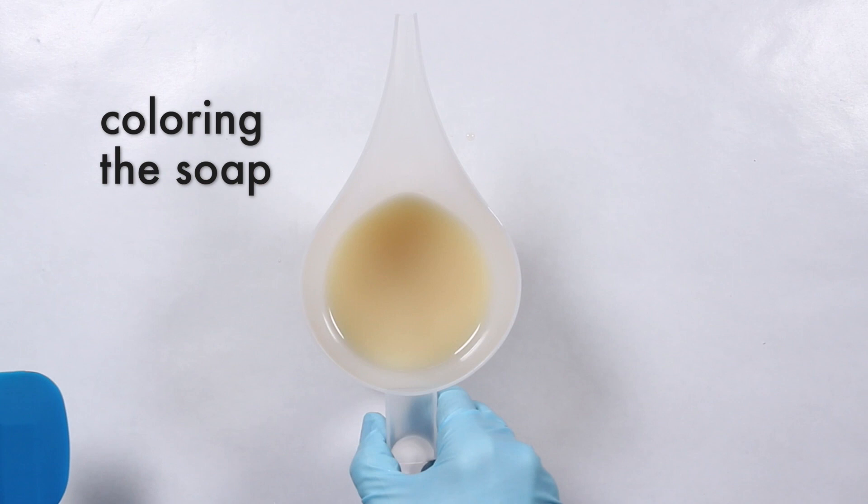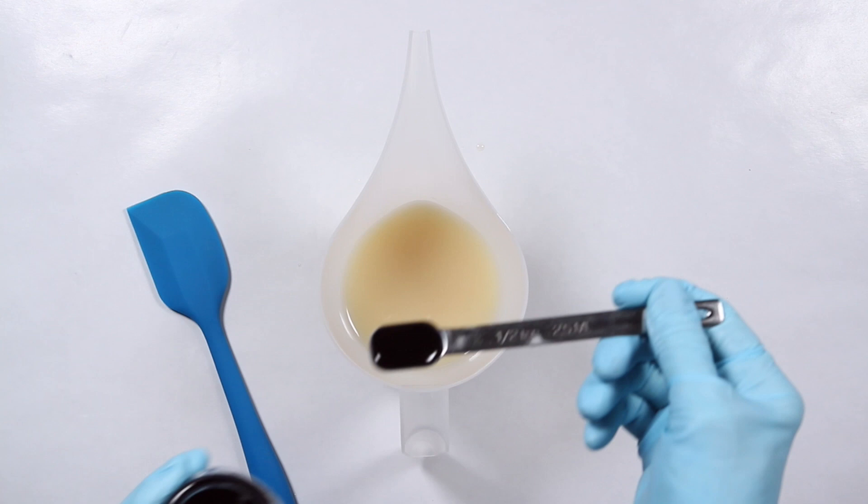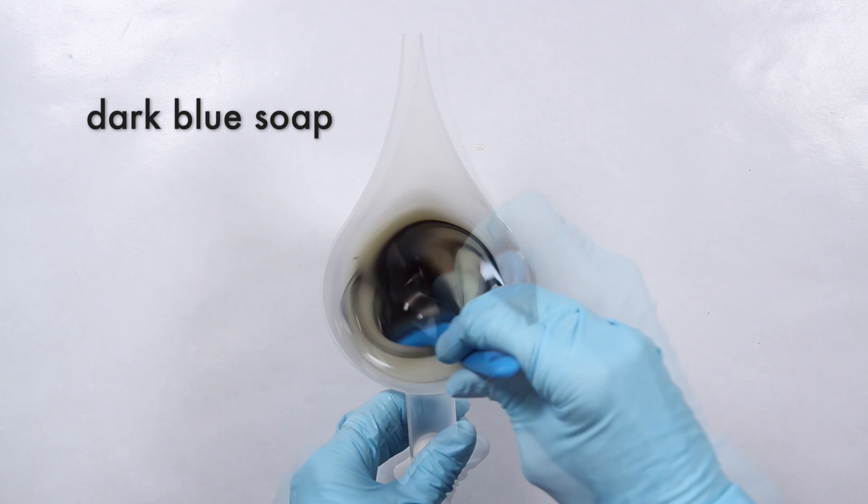To make the dark blue soap, I used a combination of the indigo and charcoal I prepared earlier. To one cup of soap, I added a half teaspoon of the indigo oil and about a quarter teaspoon of the charcoal.